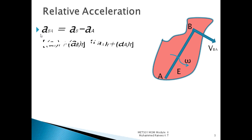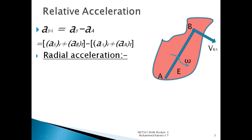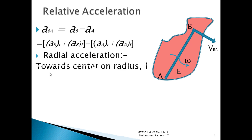In this case, we have two components. Acceleration of b has a radial component plus a tangential component, minus acceleration of a with radial plus tangential components. Radial acceleration acts towards the center, along the radius. Its magnitude value is v squared by r, or substituting v with omega: omega squared into r.